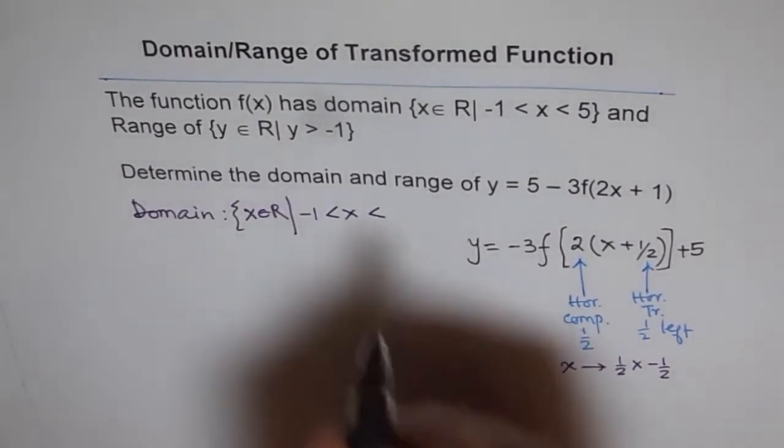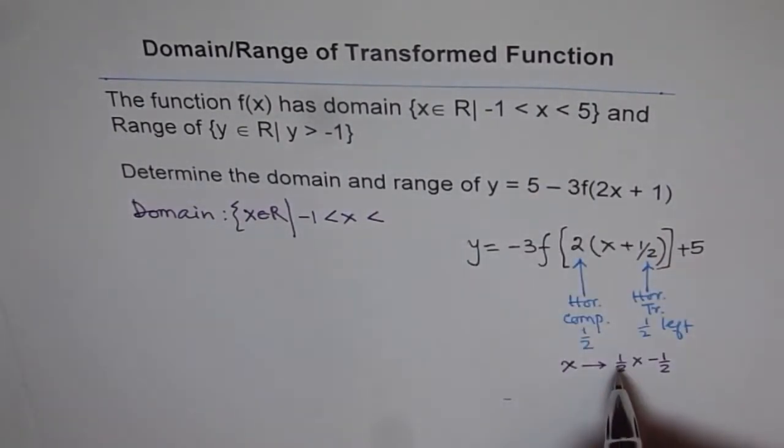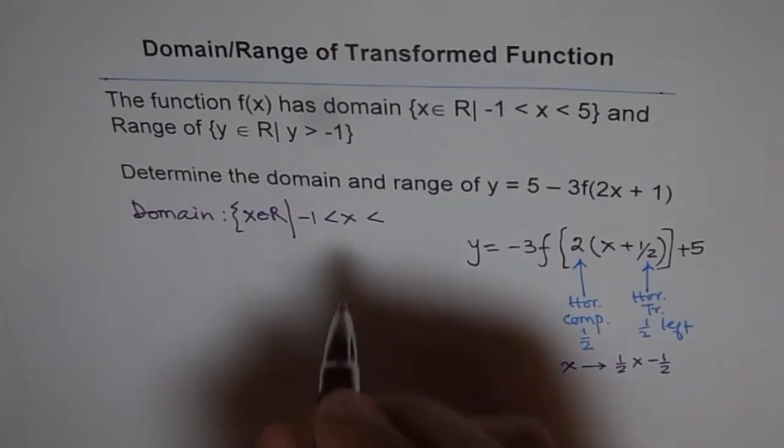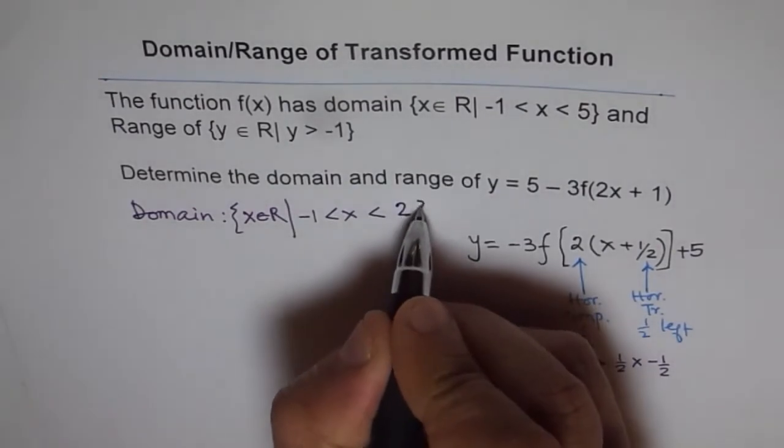And x is less than five times half is five and a half. Five times half is five and a half. So five and a half, we can write this as 2.5. And 2.5 minus 0.5 will give me two. So this becomes two.